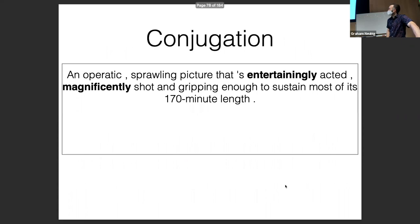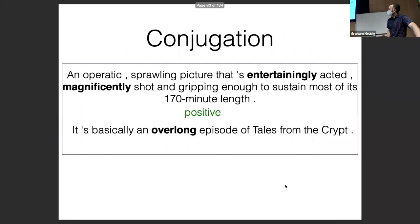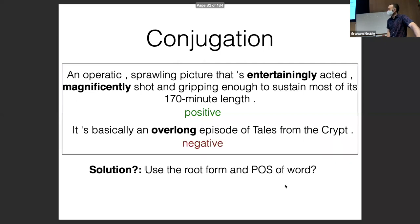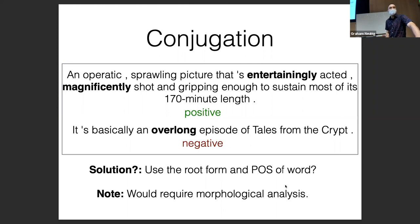Conjugation: 'An operatic, sprawling picture that's entertainingly acted, magnificently shot' — both 'entertainingly' and 'magnificently' didn't appear in the training set, though their roots did. If you could analyze words into their root forms using a morphological analyzer or lemmatizer, you could probably solve this. This is even harder in non-English languages because English doesn't conjugate very much; other languages do a lot. Negation — this is the fun one. 'This one is not nearly as dreadful as expected' — positive. 'Serving Sara doesn't serve up a whole lot of laughs' — negative. The solution might be: if a negation modifies a word, disregard or flip its sentiment polarity, which would require some syntactic analysis.